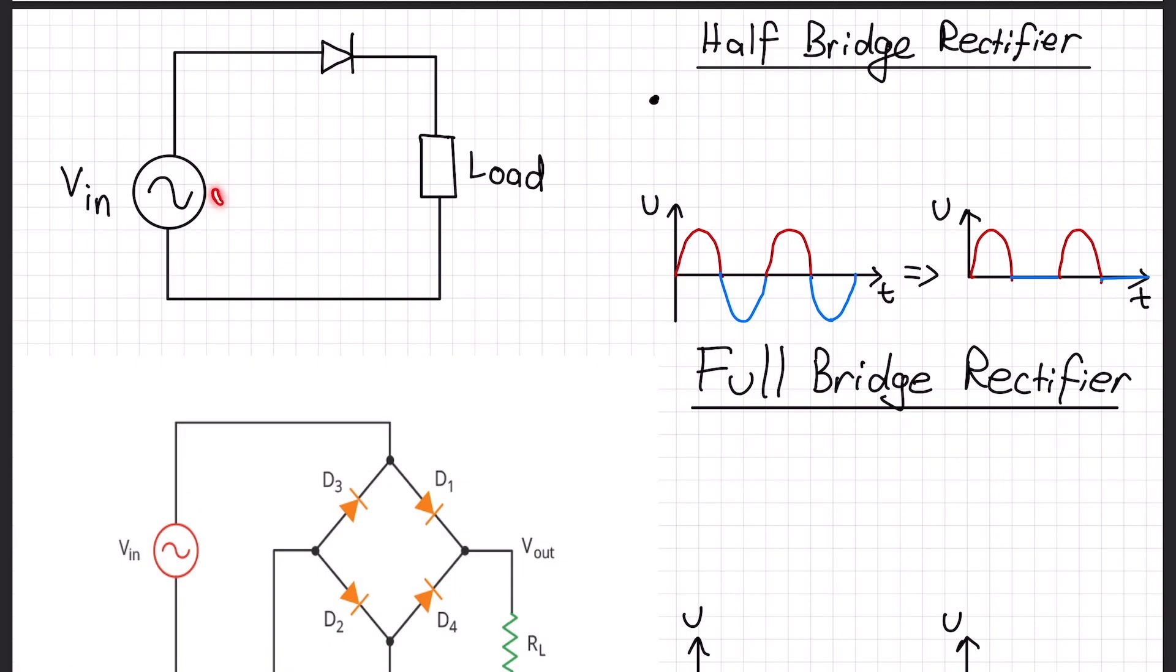So we have a half bridge rectifier here. We have one AC voltage source, one diode, one load. As you can see, only positive sine waves will be allowed and negative sine waves will be blocked. It prevents only the plus side of a sine wave through, and negative sides will be blocked. So it's inefficient because we can't use the negative sine waves.